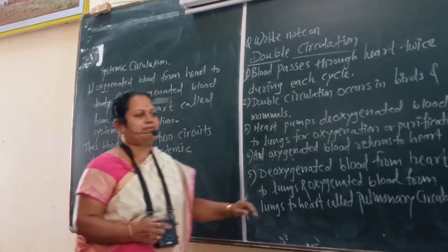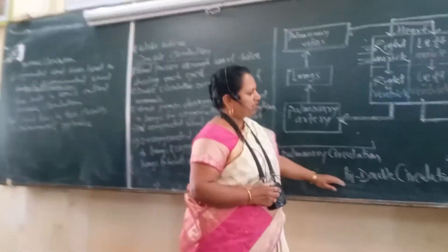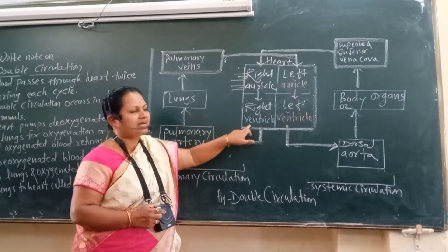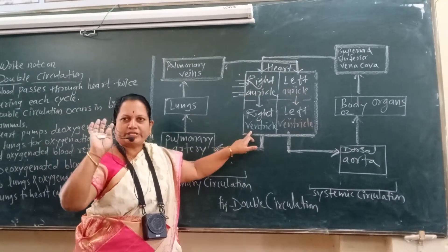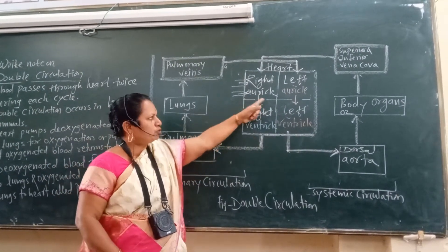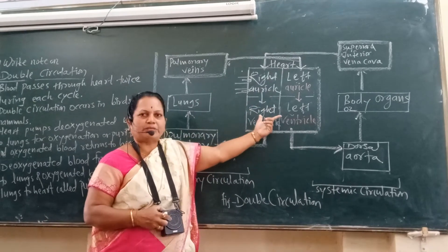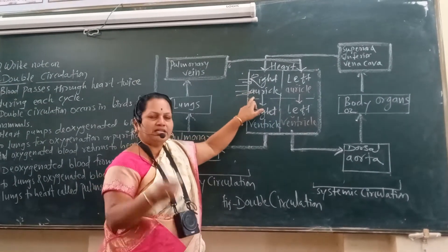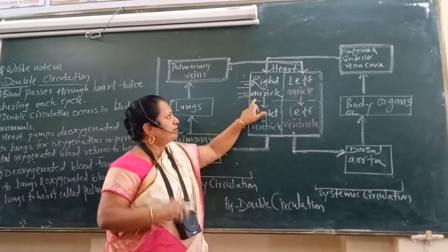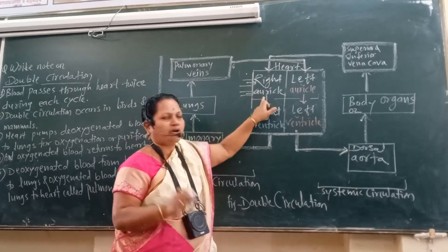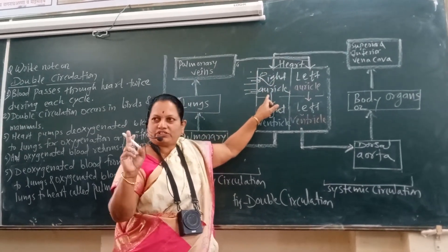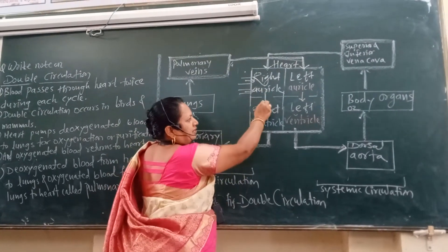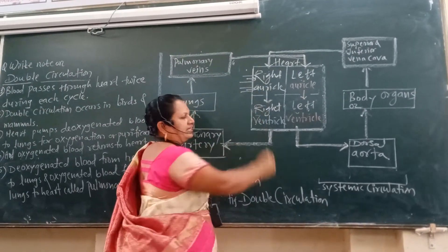We can clearly see that in double circulation, the human heart consists of four chambers. The upper two chambers are the auricles and the lower two chambers are called ventricles. The right auricle receives impure, deoxygenated blood from the body, and that deoxygenated blood then enters into the right ventricle.